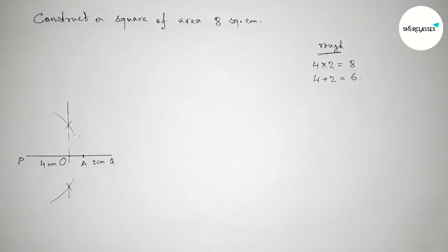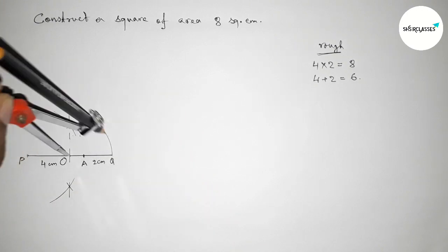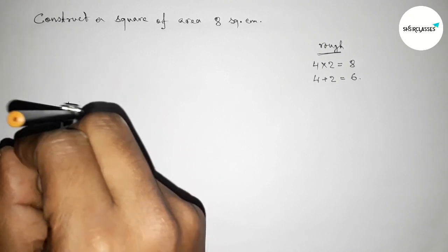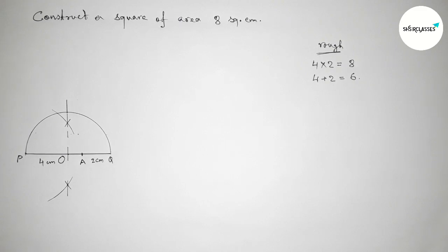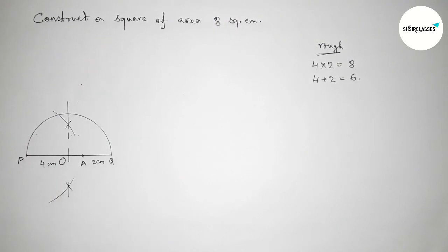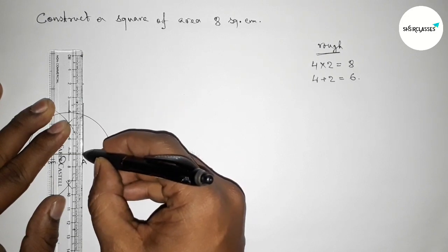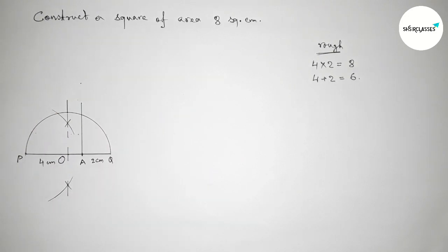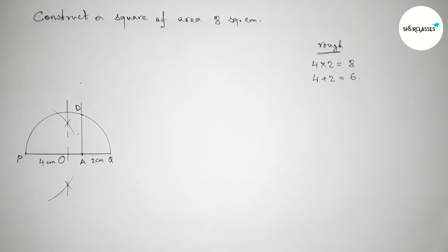Taking point O here and now taking the length OP and OQ to draw a semicircle. Next, we have to draw a 90 degree angle on point A with the help of a protractor. Putting the protractor on point A perfectly — this is 90 degrees. Now joining the line which meets the semicircle at a point, taking that as point D. So AD is one side of the square.